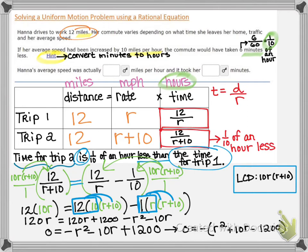So at this point, you can stop the video and you can continue to factor on your own and you will arrive at the value of R, which will be her actual speed. Or you can keep watching and we'll go on to the next slide and we'll continue to factor.